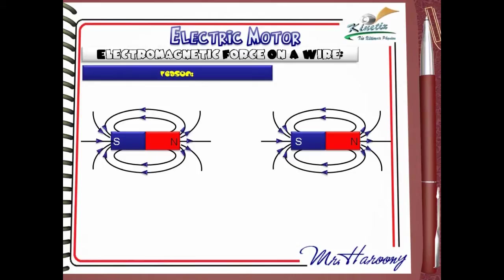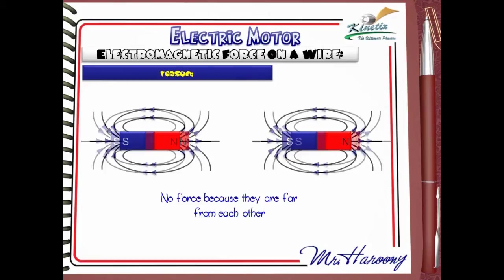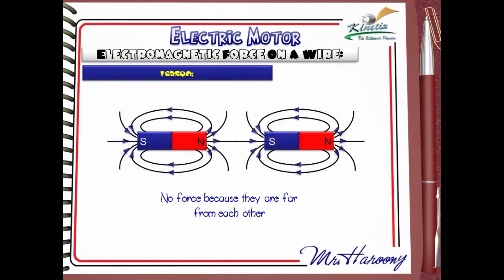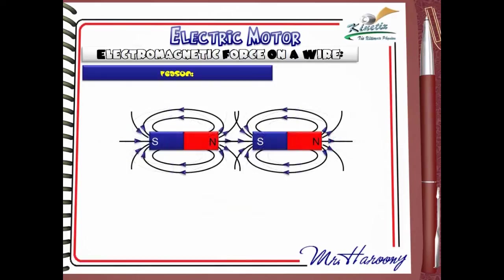Consider two magnets — as long as they are far from each other, no force is exerted because they are far apart. As they get closer, still no effect. But at a certain moment, their two magnetic fields overlap, and once they overlap, interaction between the two magnetic fields takes place, causing a force.